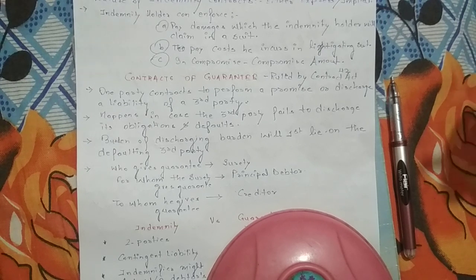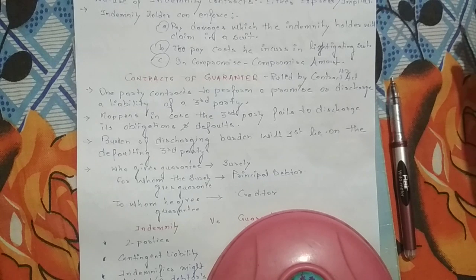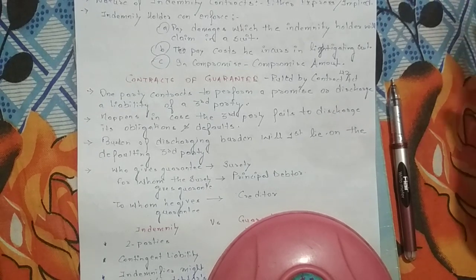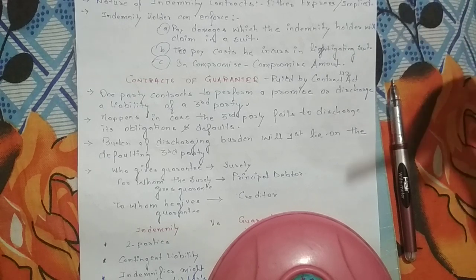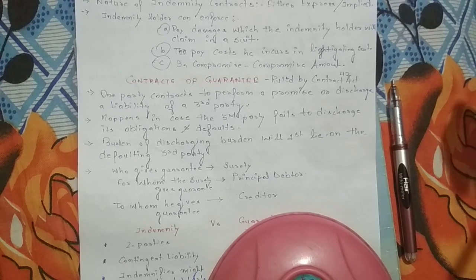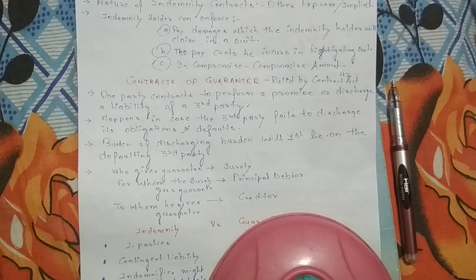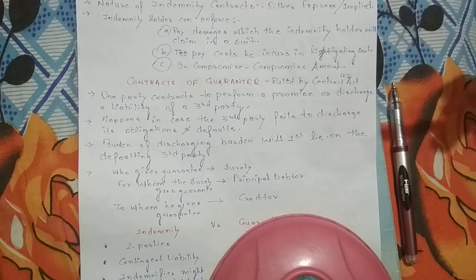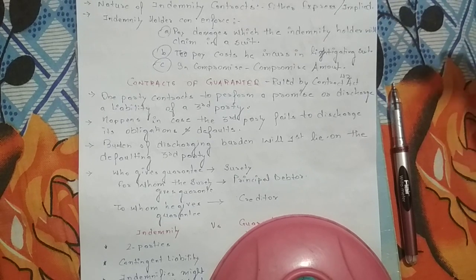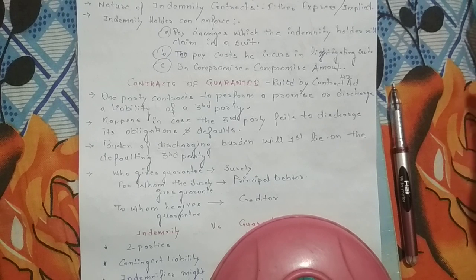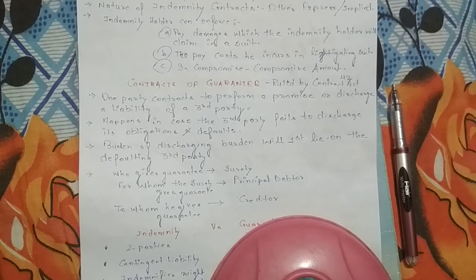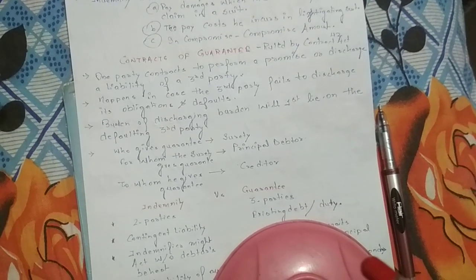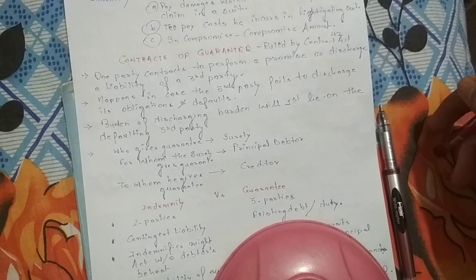The burden of discharging obligations will first lie on the defaulting third party. If the bank is giving a guarantee on behalf of the contractor to the government agency, then the first liability goes to the contractor. If the contractor is not able to pay, then the bank pays the guarantee amount. The surety gives the guarantee for the principal debtor. Here the bank is the surety, the contractor is the principal debtor, and the government agency is the creditor. You can also relate this to the bond you sign when joining a bank — the surety is your father or mother, the principal debtor is you, and the creditor is the bank.